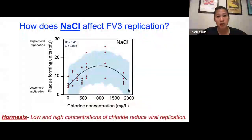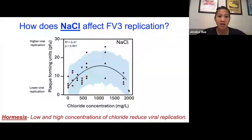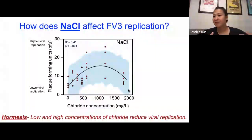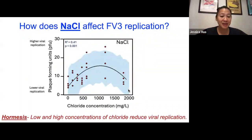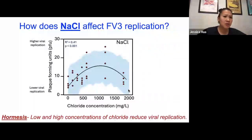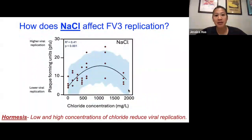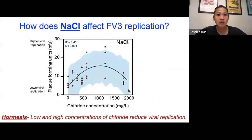What does sodium chloride do to Frog Virus 3 replication? On the x-axis is chloride concentration; on the y-axis are those plaques. Much to our surprise, we found a hump-shaped response, where low and high concentrations of chloride reduced viral replication, but intermediate concentrations seemed to enhance viral replication. This took us by surprise because a central assumption in toxicology is that as the concentration of a pollutant increases, there should be a simple dose-dependent, often linear, response. When we saw this, we wondered if it was a lab artifact.